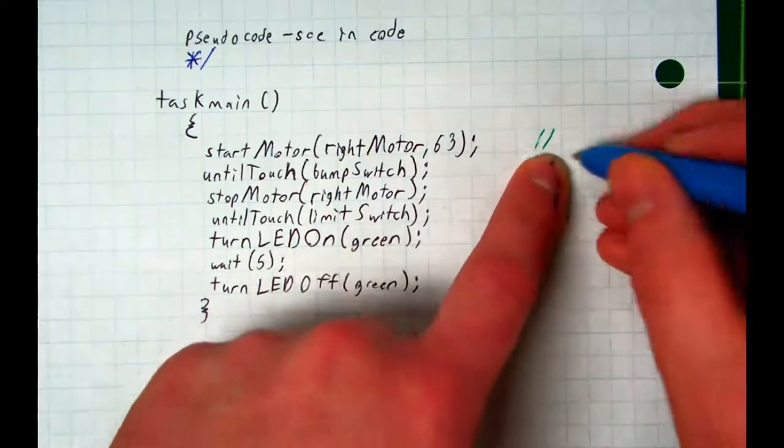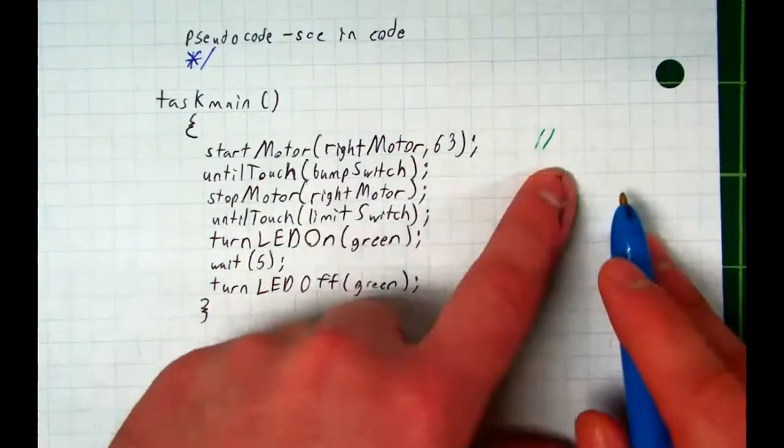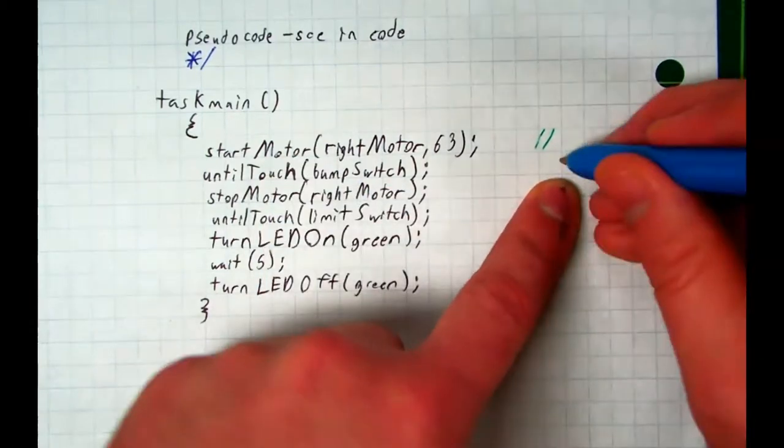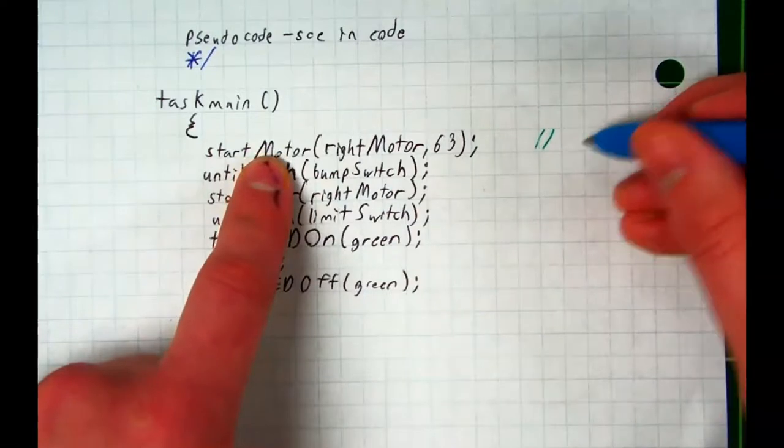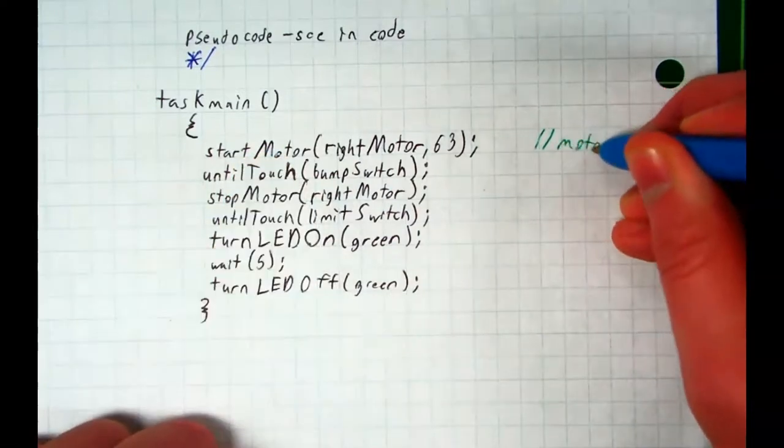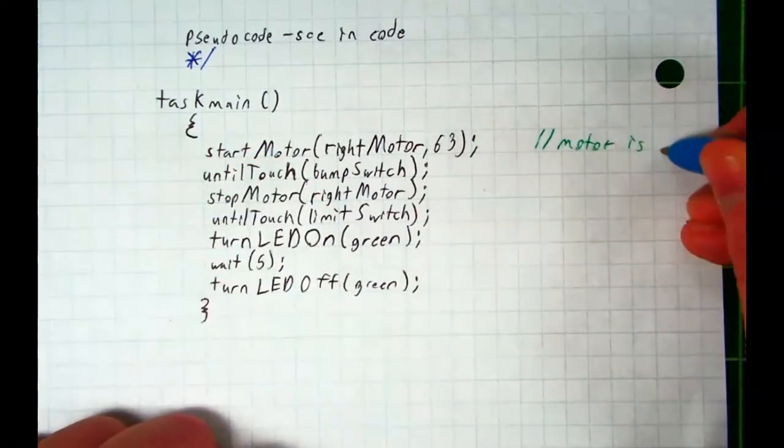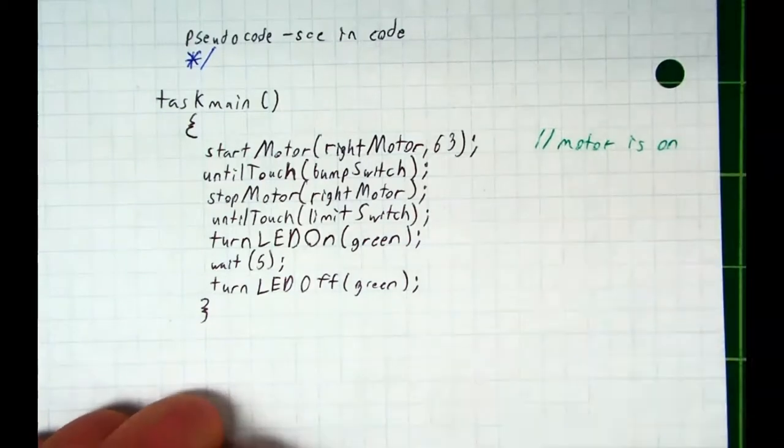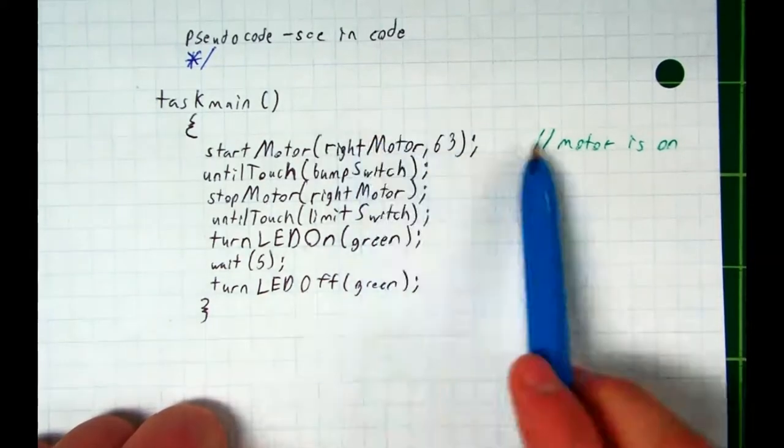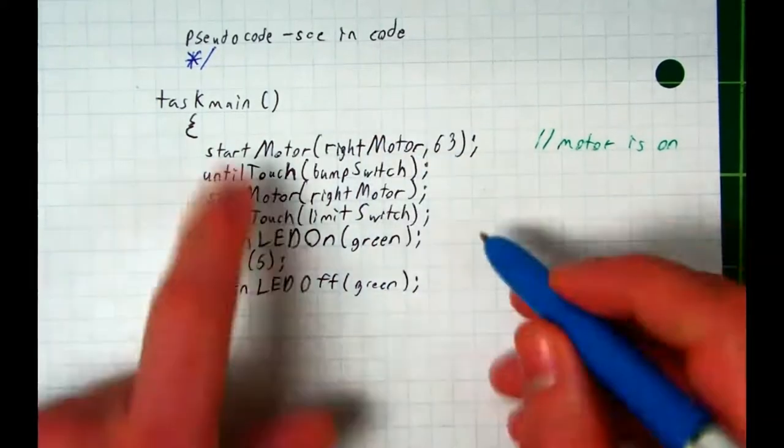What this says is everything after these two symbols will be pseudocode on this line only. If I were to write dash-star, it would turn off everything after it including every other line. Make sense? But I write these two dashes and I write the code. Oops, this one is for startMotor rightMotor, I went to the wrong line, but that's fine. For this line, what does that say? Motor is on.